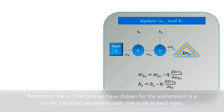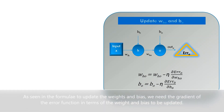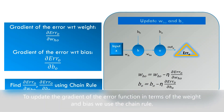Remember, the architecture we have chosen for the explanation is a simple two-layered perceptron with one node in each layer. As seen in the formula, to update the weights and bias, we need the gradient of the error function in terms of the weight and bias to be updated. To compute this gradient, we use the chain rule.